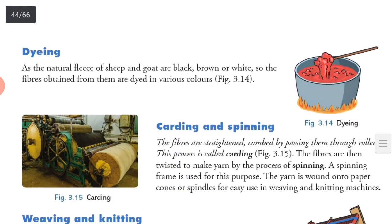Next is coloring or dyeing. As the natural fleece of sheep and goat are black, brown or white, the fibers obtained from them are dyed in various colors. Now carding and spinning: the fibers are straightened and combed by passing them through rollers. This process is called carding. The fibers are then twisted to make yarns by the process of spinning. A spinning frame is used for this purpose.